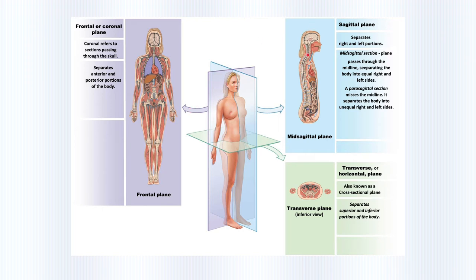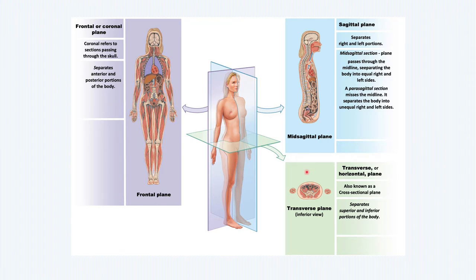We can see an example here. On this plane, we can definitely see the spinal cord a little bit better. Under the sagittal plane, we have subsections such as the mid-sagittal plane, which would divide the body into equal right and left.